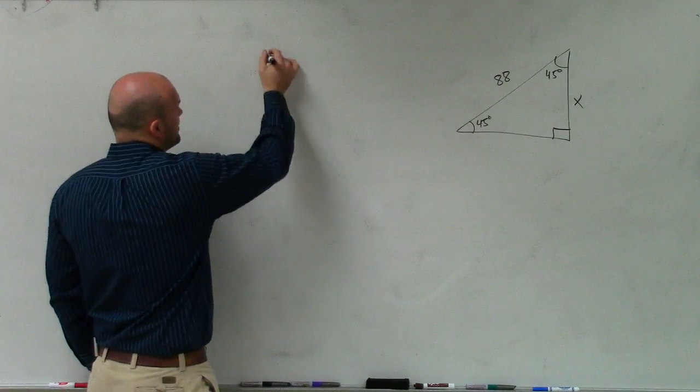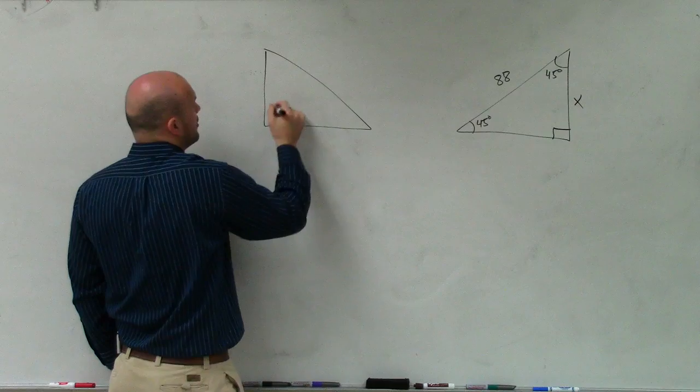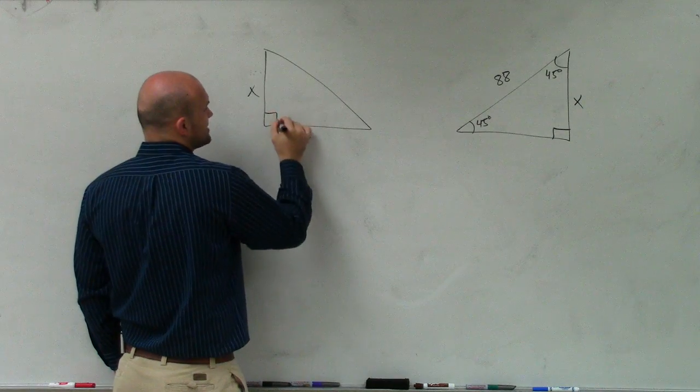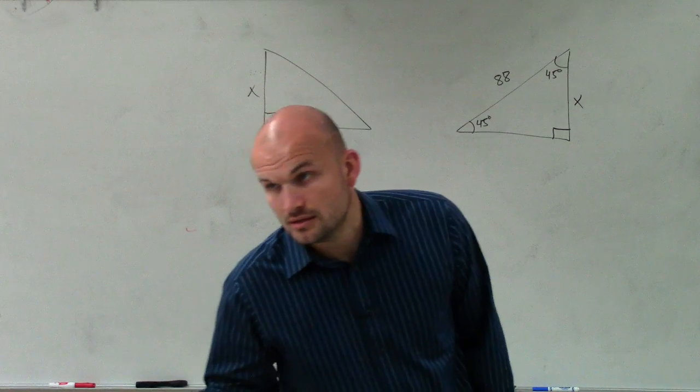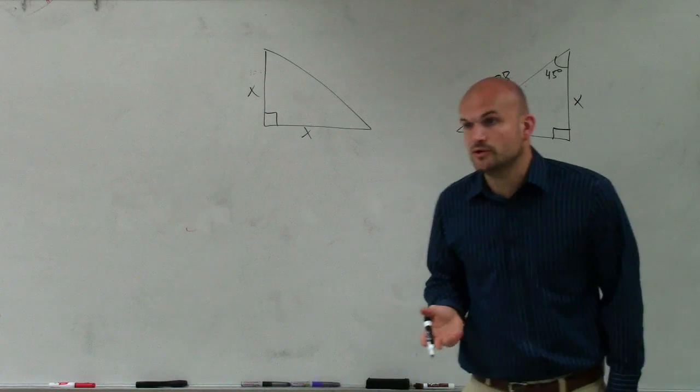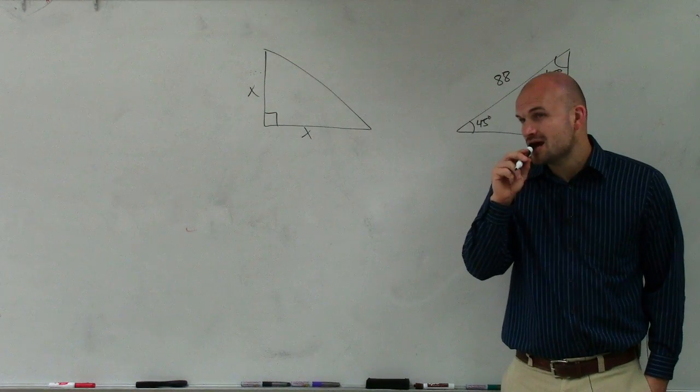Devon, when you had the 45-45-90 triangle, what we talked about was if these two were x's, to find the hypotenuse, we had to multiply by the what? The square root of 2. Square root of 2.